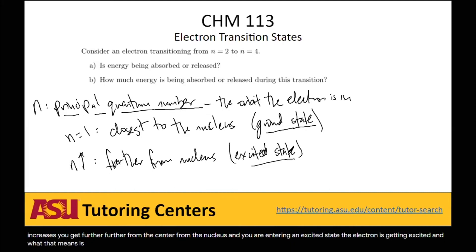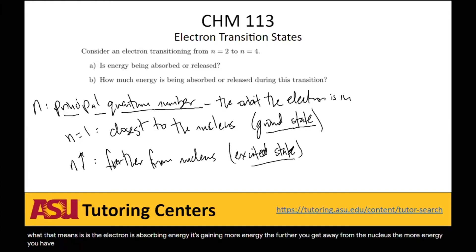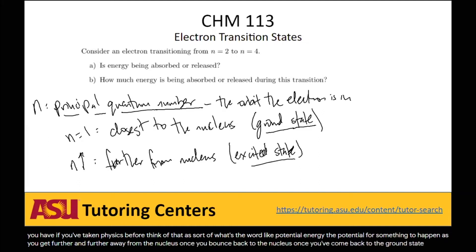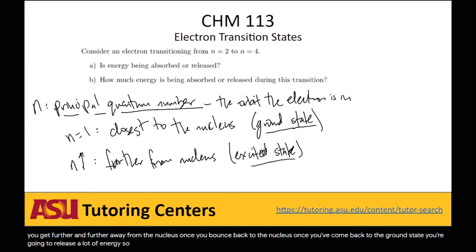What that means is the electron is absorbing energy — it's gaining more energy. The further you get away from the nucleus, the more energy you have. Think of that as potential energy: as you get further and further away from the nucleus, once you bounce back to the ground state, you're going to release a lot of energy. You're building up that energy to come crashing back down to the center.